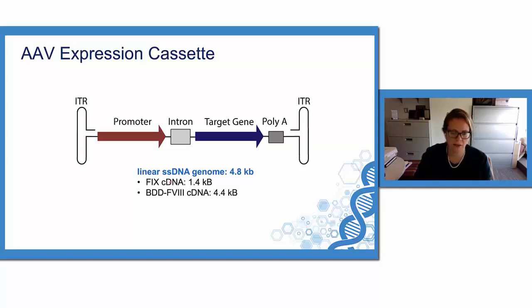The only part of the wild type AAV virus that is maintained with vector production is the internal terminal repeats, which flank the open reading frame for insertion of your expression cassette. And these ITRs are required for AAV vector packaging.